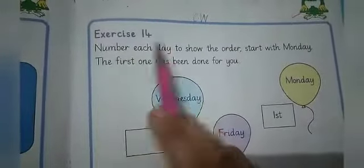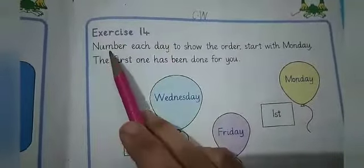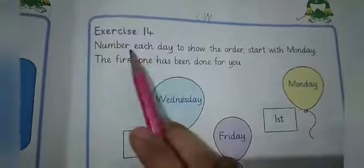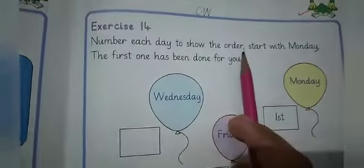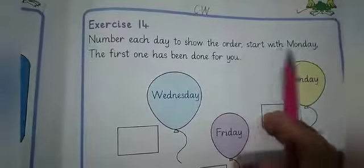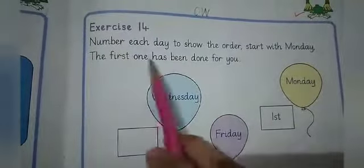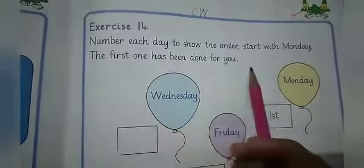Exercise 14 — today we will write a number next to each day to show the order, starting with one. The first one has been done for you.